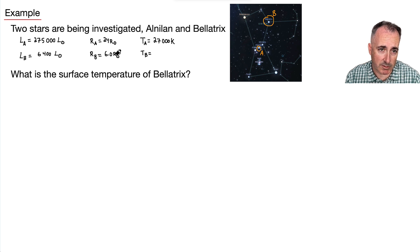The radius of this star is 24 times the radius of the sun, whereas B is 6 times the radius of the sun. We know the surface temperature of A, of Alnilan, but we don't know the surface temperature of B. In fact, that's what we're trying to find.